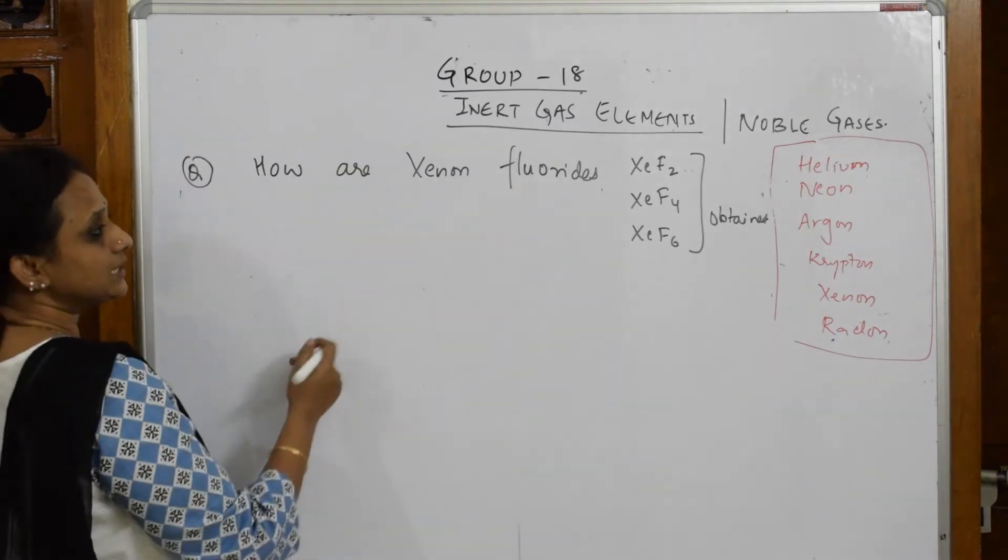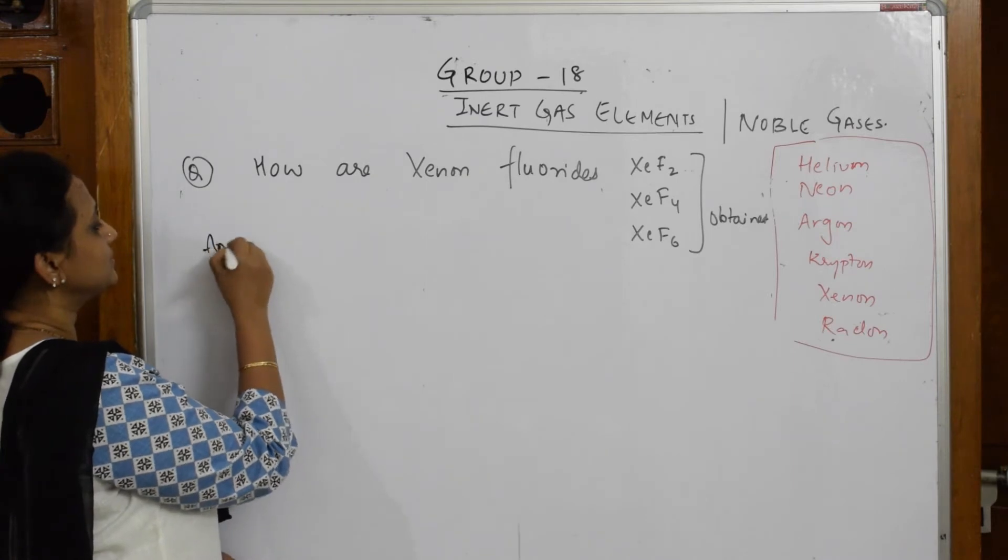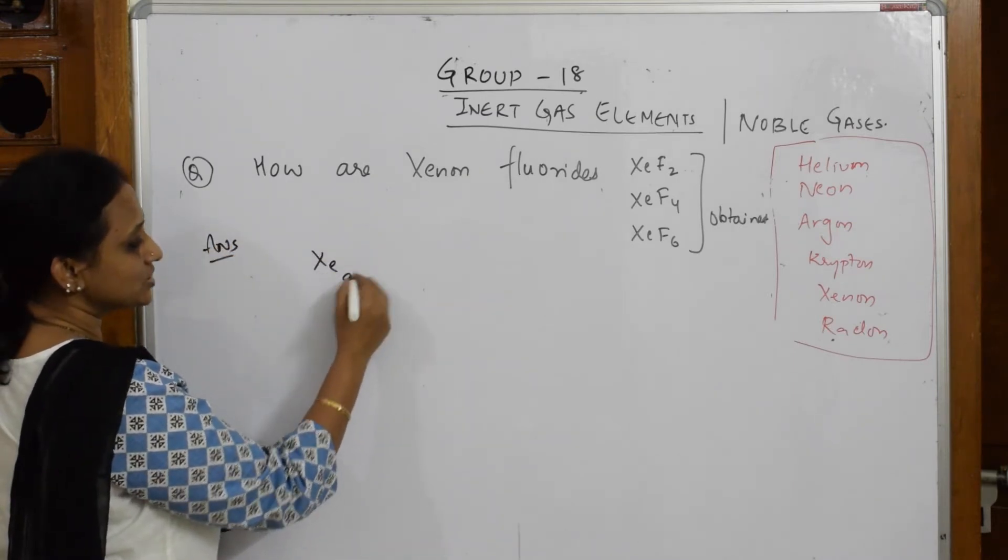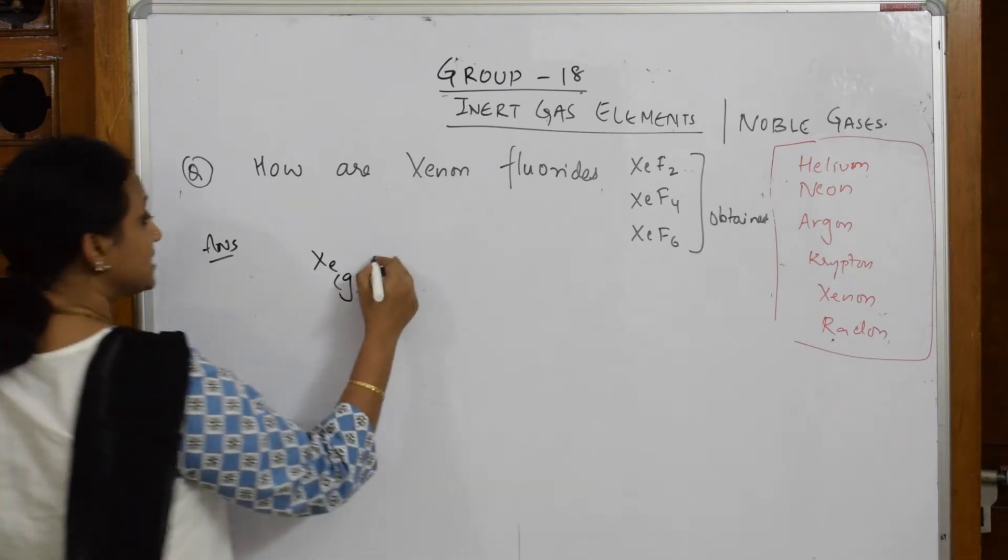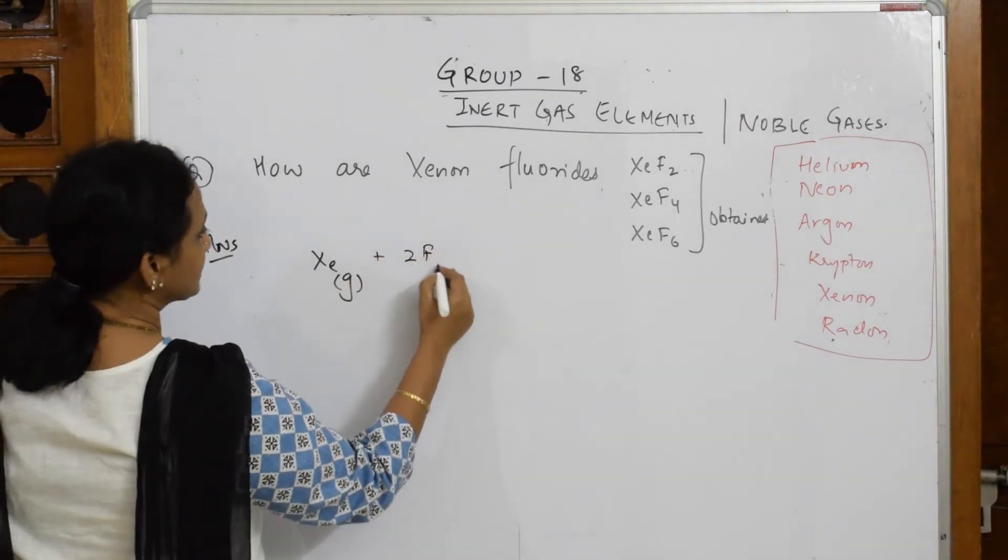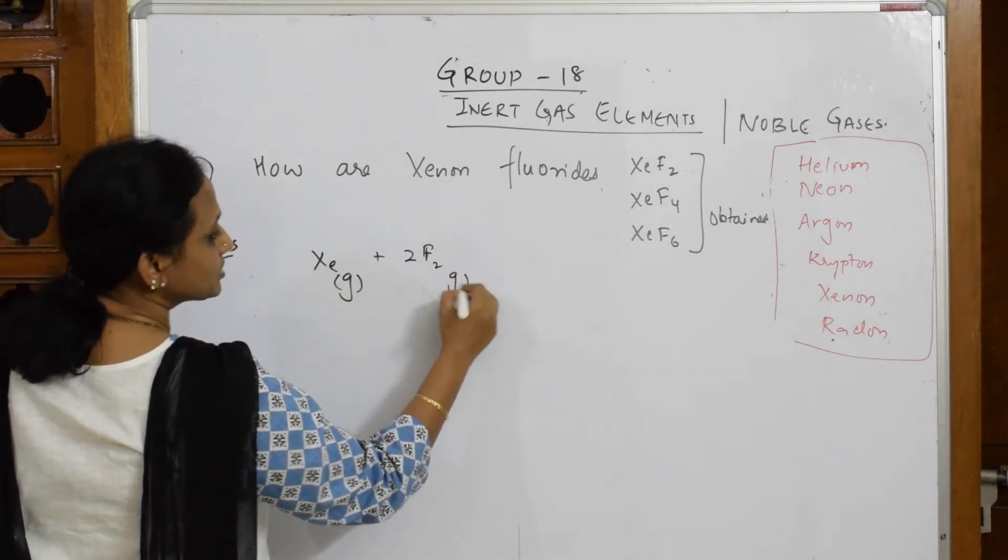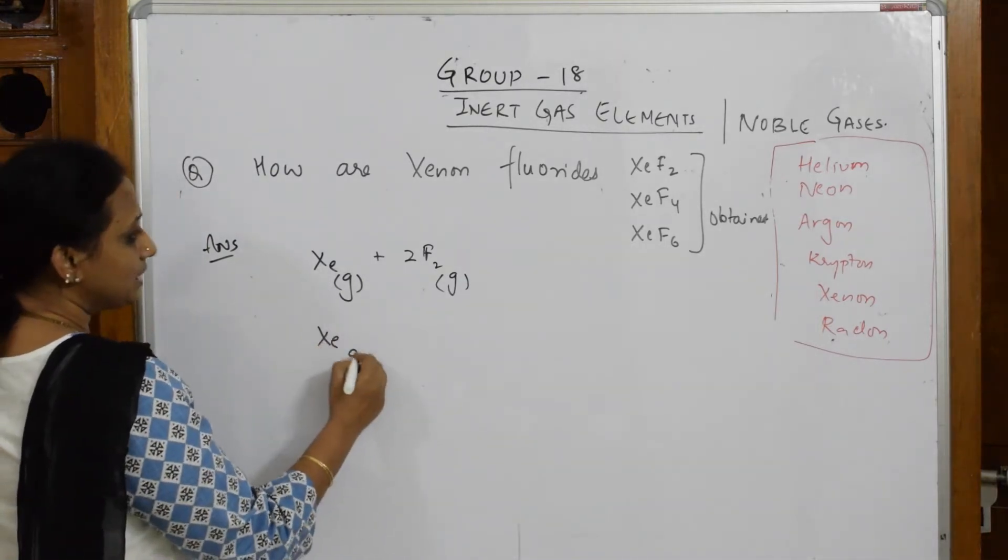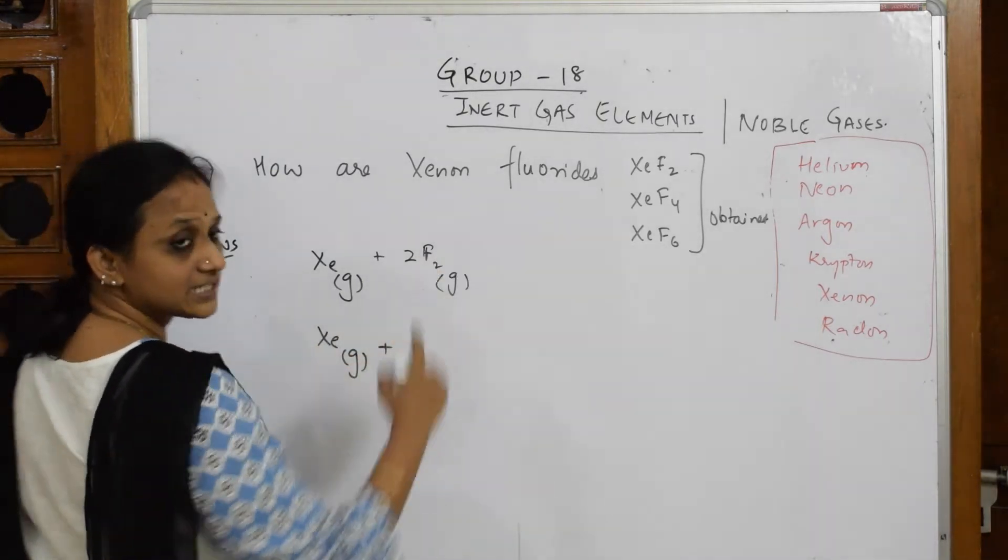They've asked me to prepare XeF2. Simple. Let us write the first compound: xenon in gaseous state. I am going to take two fluorine atoms, also in gaseous state. Next, I have to prepare XeF4.